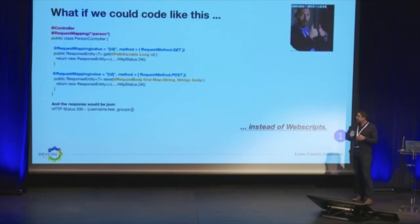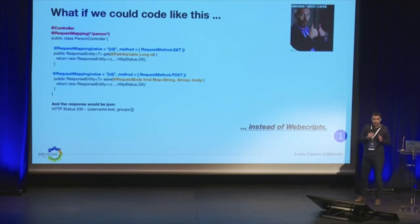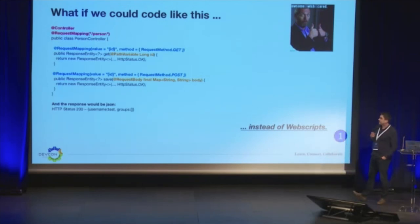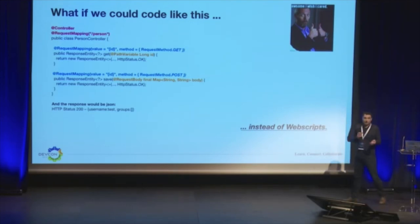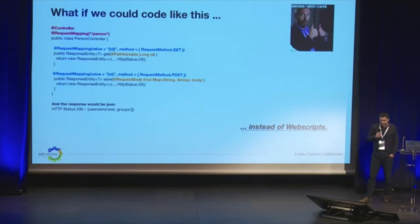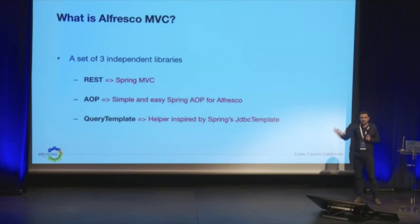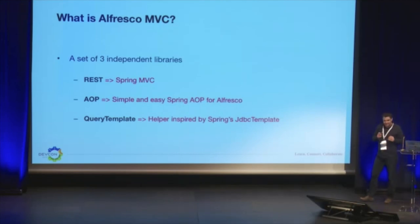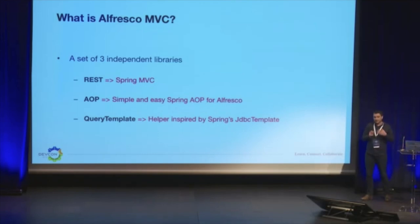What if we could do something differently — instead of a web script, we stay inside Alfresco, we stay inside the web script lifecycle, but we use Spring MVC controllers. Whenever we want, we get normal JSON back — because that's what we as developers want. Alfresco MVC is a set of three independent libraries: REST, AOP, and Query Template. I'll talk about each because they solve different issues.